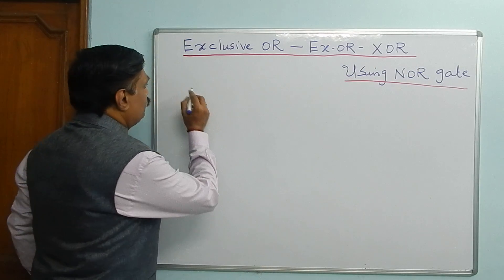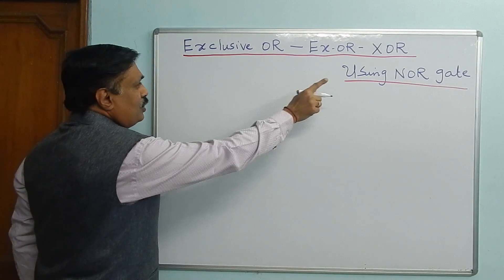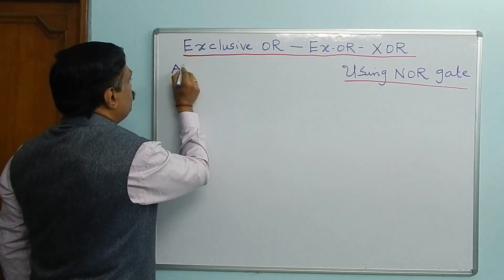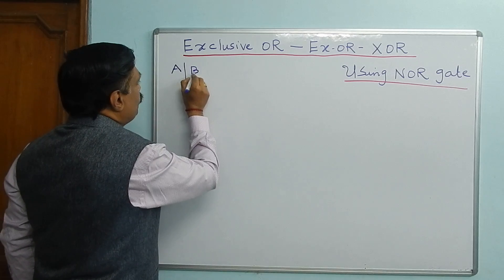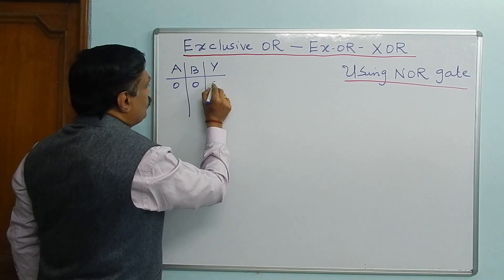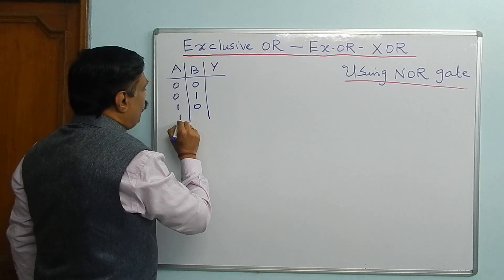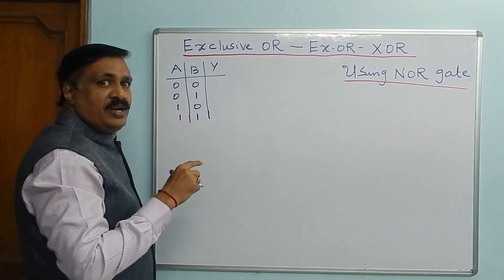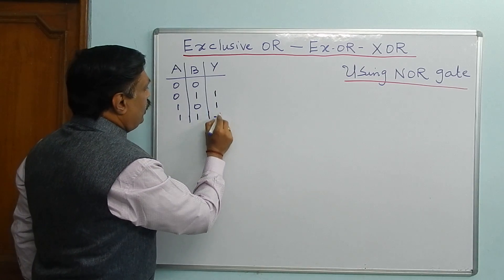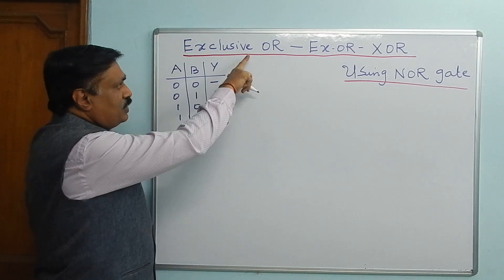Now I will draw the truth table again and I am drawing the circuit. XOR gate means: A input, B input, Y output. The values are: 0,0 → 0; 0,1 → 1; 1,0 → 1; 1,1 → 0. XOR gate produces 1 for unlike inputs. This is the truth table for XOR gate.